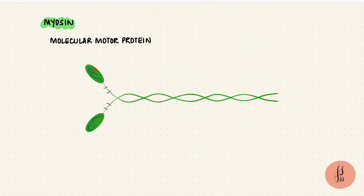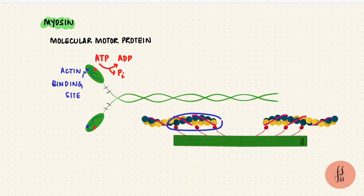The myosin heads have ATPase activity because they convert ATP to ADP and use the energy to move the thin filament. They also have an actin binding site to bind to actin which forms the thin filament.